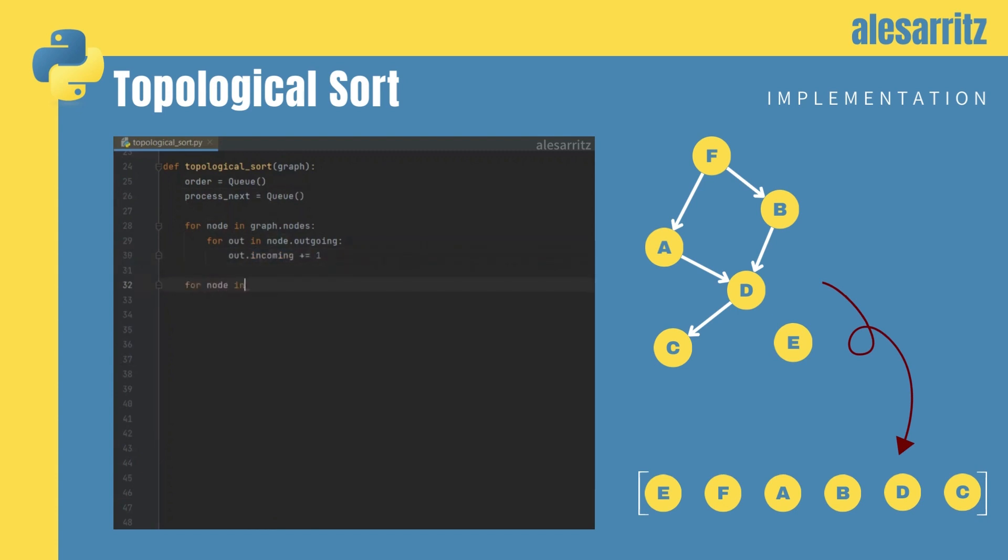Now, let's identify all the nodes with no incoming edges and add those nodes to ProcessNext.